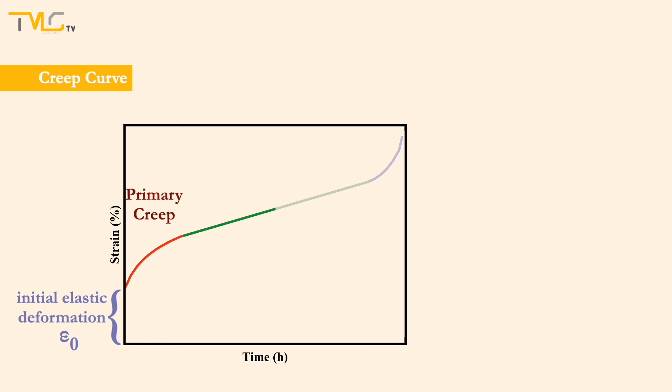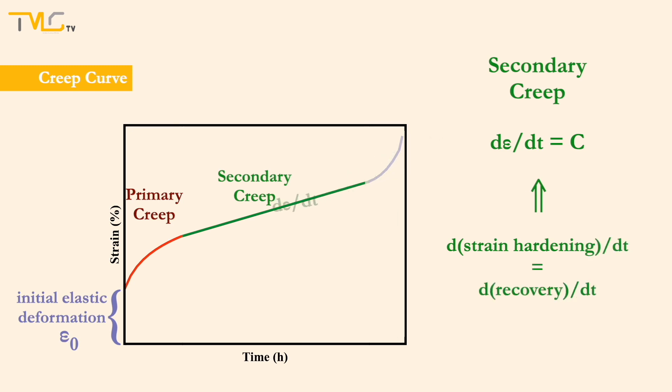Primary creep stage is followed by secondary creep stage, where the creep rate is nearly constant due to the balance between competing strain hardening and recovery processes. The slope of the curve at this stage is the minimum creep rate, seen throughout the whole creep process and is the most important design parameter derived from the creep curves.